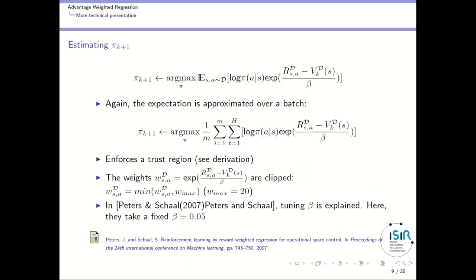For estimating the policy, as I said, this is very similar to policy gradient techniques. Again, we approximate the expectation over a batch of m trajectories. In the derivation, they show that using this particular criterion can result in enforcing a trust region, related to trust region policy optimization or relative entropy policy search algorithms. One technical detail is that the weights corresponding to these terms are clipped, because they may run to very large or very low values — the value is never higher than W_max, which is set to 20.